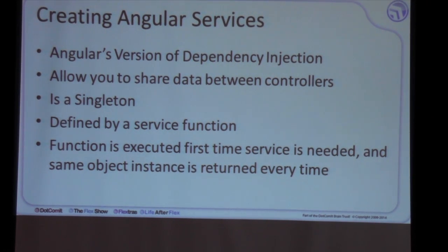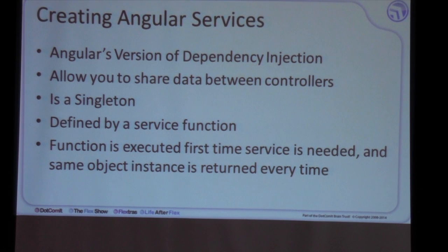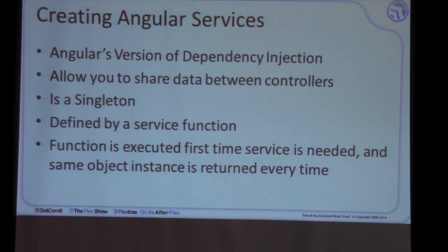Angular services: we already talked about one service — the scope service — which comes built into Angular. But we can actually create our own services, which allow us to share variables or functionality between different AngularJS controllers. Services, factories, and providers are really three different names for the same thing with slightly different behavior. We're going to look at the service, which is a layer of abstraction on top of the factory, which is a layer of abstraction on top of the provider. For all intents and purposes, the service is the easiest to use, which is why I chose it for this presentation.